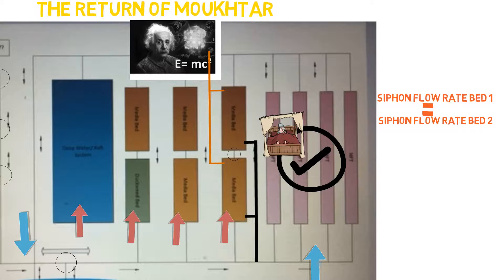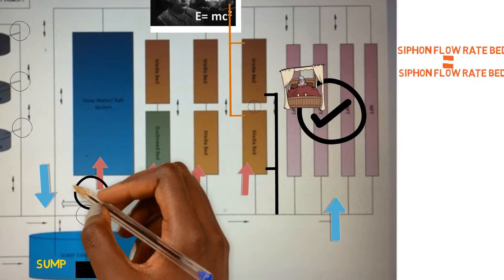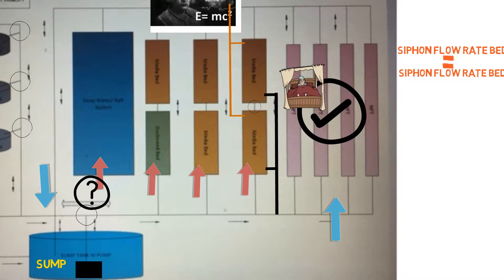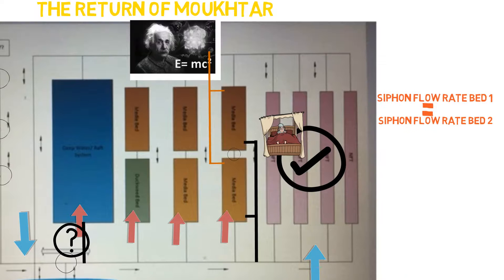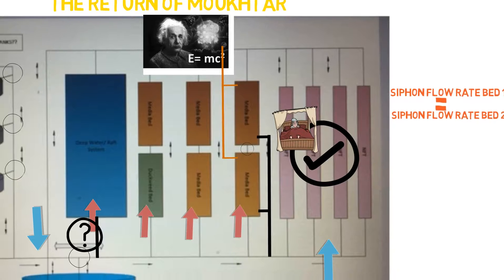Moving along to the deep water culture system — we can see there's no inlet, so the water isn't going to jump from the sump tank to the deep water culture system. I'm assuming that was by accident, and we can tell you already know an inlet needs to go there. We'll just add that on part of our main line, and that will take care of that portion.